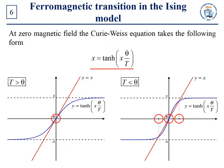Thus, the main conclusion is that at T equal to θ, a phase transition into the ferromagnetic state occurs. In other words, at T greater than θ with zero magnetic field, we obtain zero magnetization — the paramagnetic phase. And at T less than θ with zero magnetic field, we obtain non-zero magnetization — the ferromagnetic phase. So, the value θ is called the Curie temperature, or the transition temperature into the ferromagnetic state.